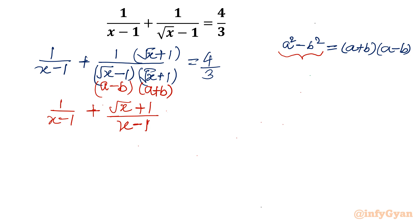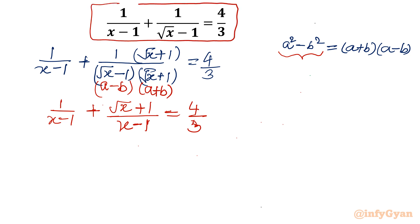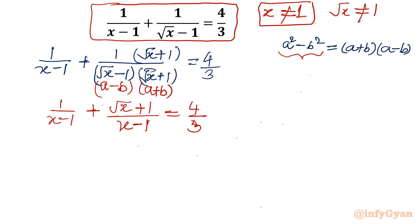The denominator is now the same. Also, as per the given equation, the denominator cannot be zero. So x cannot be equal to 1, and square root of x cannot equal 1, which again gives x cannot equal 1.